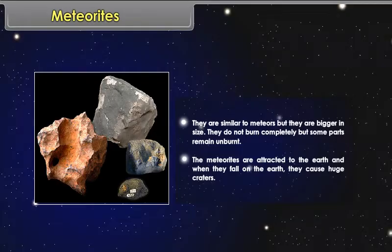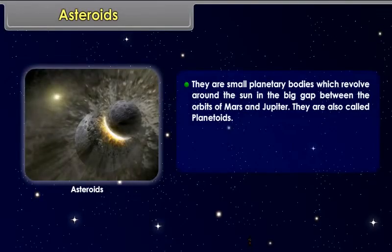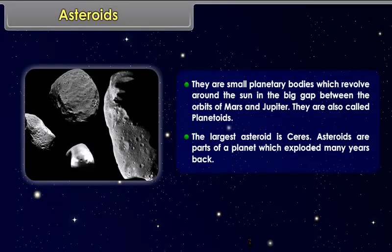Asteroids. They are small planetary bodies which revolve around the Sun in the big gap between the orbits of Mars and Jupiter. They are also called planetoids. The largest asteroid is Ceres. Asteroids are parts of a planet which exploded many years back.